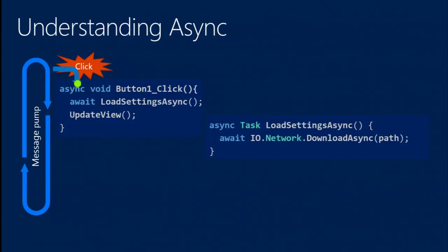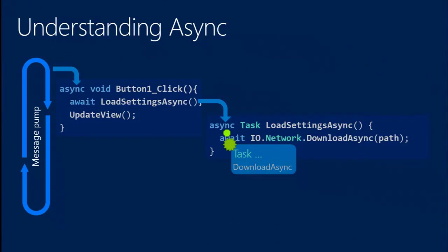When you're in a UI framework like XAML, WPF, or WinForms, there's a message pump underneath that takes queued messages and processes them one at a time — things like mouse moves, clicks, hovers, and animations. For example, when the user clicks, control flows into our button-one-click event handler. The first line says await load-settings-async, so we evaluate that expression — it's a task-returning method, so we call it and get back a task.